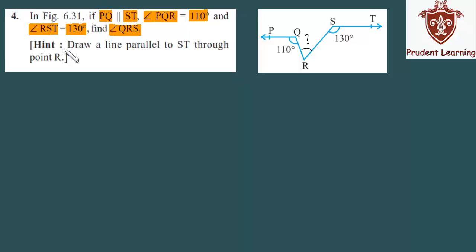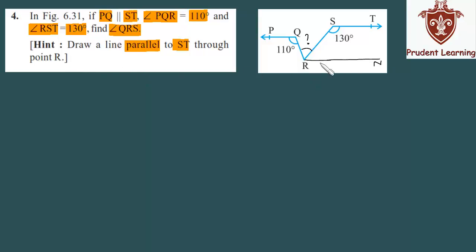The hint given is to draw a line parallel to ST. We draw a line through point R, in this direction. Now this line RN is parallel to ST. So we have constructed line RN parallel to ST.